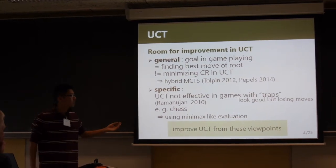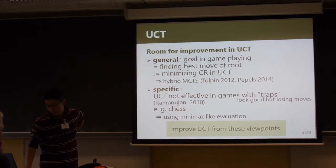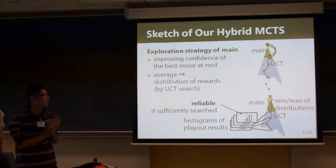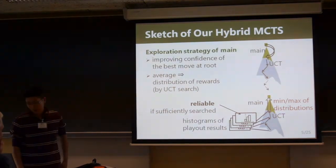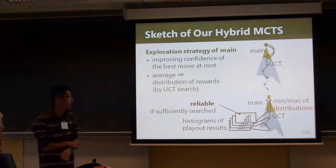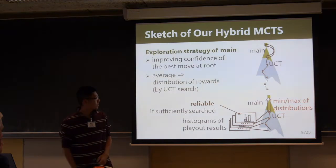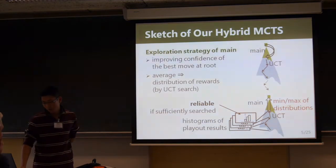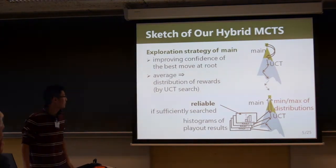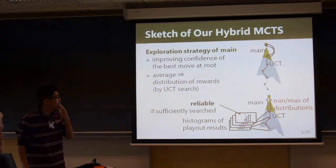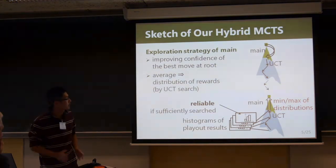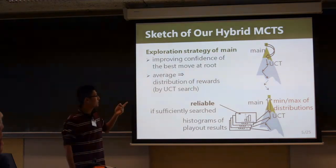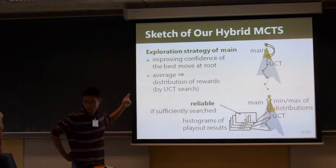From these viewpoints, the sketch of our hybrid star MCTS is depicted. The hybrid algorithm divides the search tree into 2 parts. Our hybrid star MCTS algorithm chooses a big-by-exploration strategy which aims at improving confidence in the best move after each search.